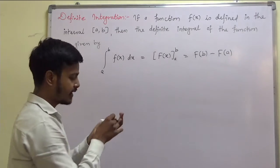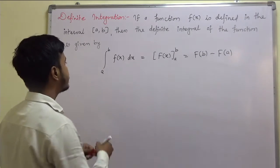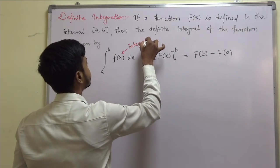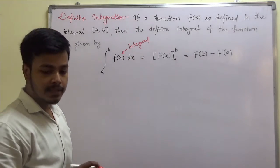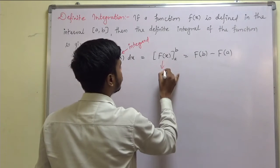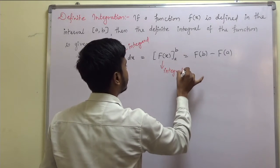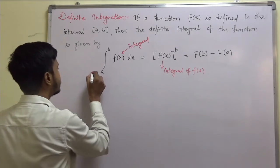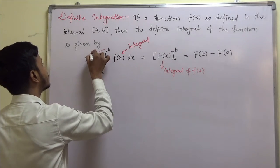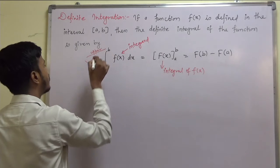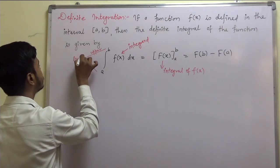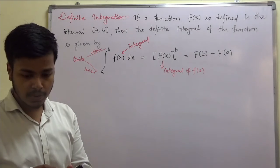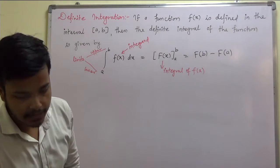What is this F(x)? This F(x) is nothing but the integral of f(x) — that is, F is the antiderivative of f(x). Here, b is the upper limit and a is the lower limit.